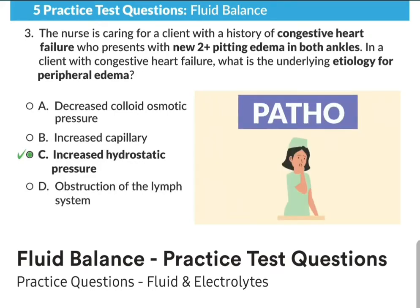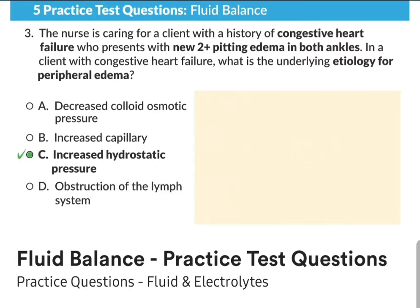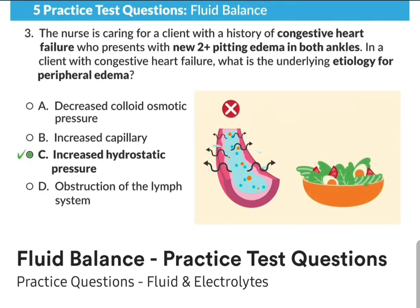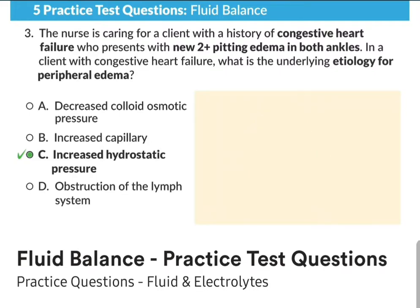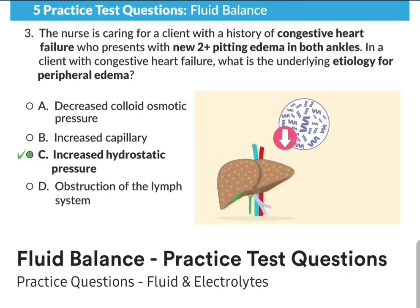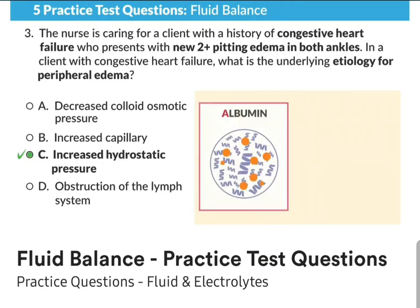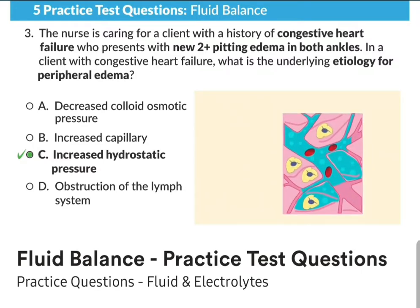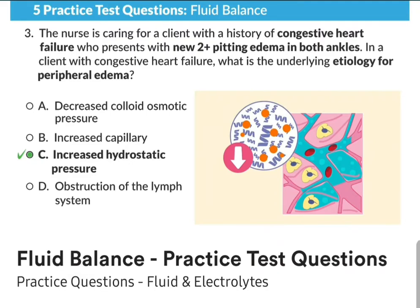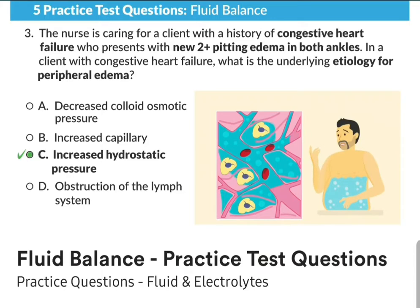Let's break down each option to explain why the others are wrong. Option A, decreased colloid osmotic pressure: decreased colloids means less colloids inside the blood to attract fluid, and osmotic pressure is the pressure applied when fluid is attracted. This is typically seen with clients with low albumin, like those with liver disease and cirrhosis, or renal disease where albumin is lost. Without albumin, fluid is not attracted into the blood vessels and leaks out into the body.